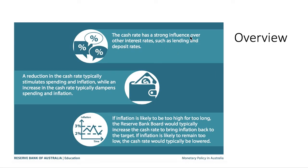The cash rate has a strong influence over other interest rates — that's why they use it. They change the cash rate, which changes the banks' general interest rates such as lending and deposit rates for a home loan or deposit bank account. A reduction in the cash rate typically stimulates spending and inflation, while an increase in the cash rate typically dampens spending and inflation. We've also got to be across different terms like stimulates, dampens, easing monetary policy, contractionary, and accommodative — all different terms they use to essentially say the same thing.